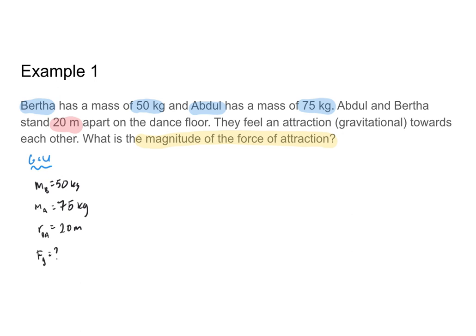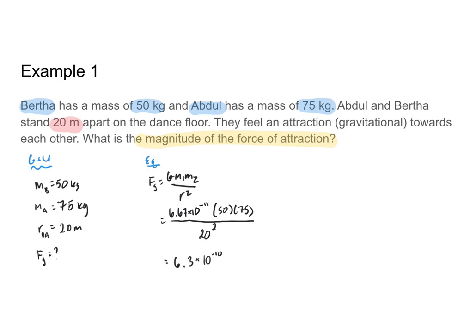I know that I'm looking for the gravitational force because I'm given the mass of each object, and when I'm given mass, that means I'm looking for gravity. My equation is the gravitational force equation: Fg equals GM1M2 over R squared. G is 6.67 times 10 to the negative 11th, M1 and M2 are 50 and 75 respectively, and R is 20 meters squared. Plugging all of that into my calculator, I get that the force of gravity between Bertha and Abdul is 6.3 times 10 to the negative 10th newtons.